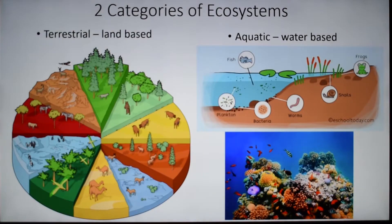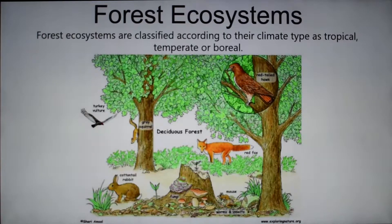All ecosystems can be categorized as either terrestrial, or land-based ecosystems, or aquatic, which are water-based ecosystems. The first type we will talk about is the forest ecosystem. In a forest ecosystem, you're going to find things like rabbits, squirrels, foxes, trees, and insects.